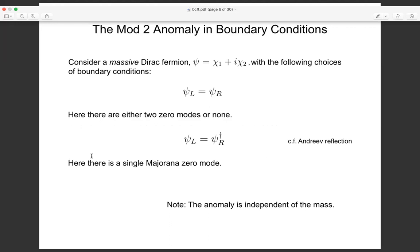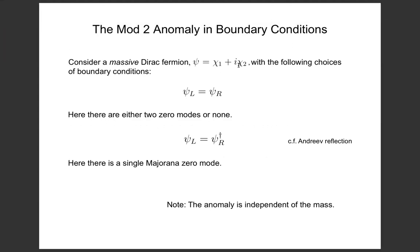What about a Dirac fermion? A Dirac fermion in one plus one dimensions can be built from two Majorana fermions, and again there are two different choices of boundary conditions. We can consider the boundary condition that preserves the U(1) vector symmetry: the left-moving fermion turns into the right-moving fermion. If you write this in terms of the two Majoranas, both obey the same boundary condition — so there are either two Majorana zero modes or none. Either way you have an even number — everything is fine.